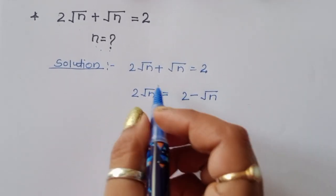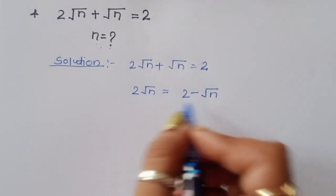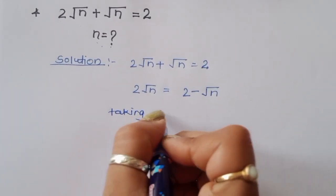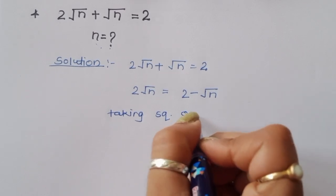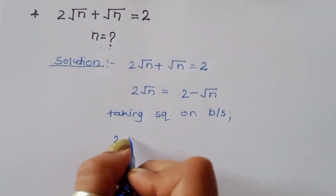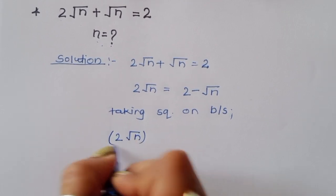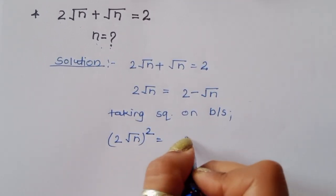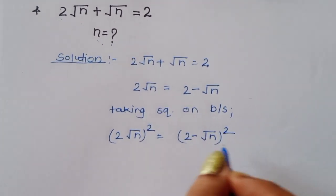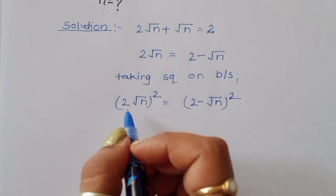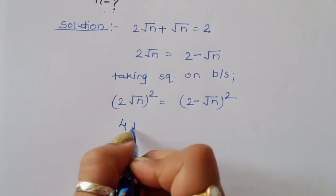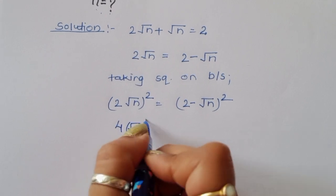Now we have to cancel this square root, so we can take the square of both sides. Taking square on both sides, we will get: 2 square root of n whole square is equal to 2 minus square root of n whole square. Now, 2 square root of n whole square — 2 squared is 4, so it will become 4 times square root of n whole square, which gives 4n.